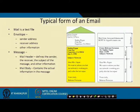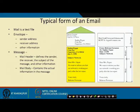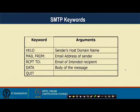A typical email format consists of an envelope (sender address, receiver address), a message header (defining sender, receiver, subject, and other information), and a mail body (the actual content). Standard SMTP keywords include: HELO (sender host domain name), MAIL FROM (email address of sender), RCPT TO (email of intended recipient), DATA (body of the message), and QUIT.